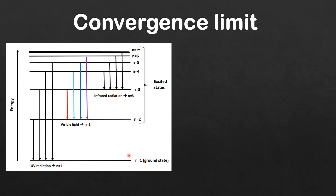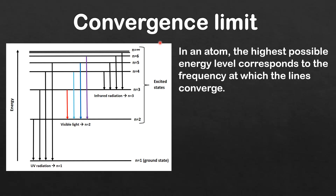You may remember from the previous video that electrons can transition between energy levels. If they absorb discrete amounts of energy in the form of photons, they can transition from lower to higher energy levels, and if they emit discrete amounts of energy, they can transition from higher to lower energy levels.